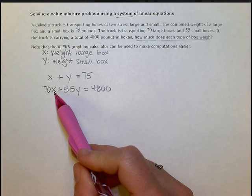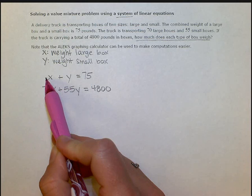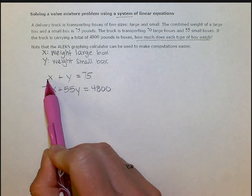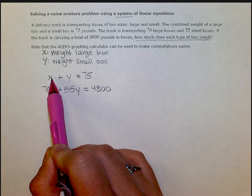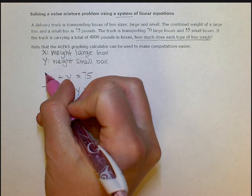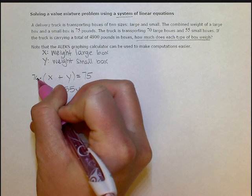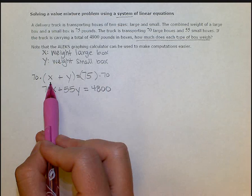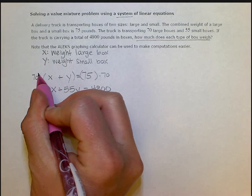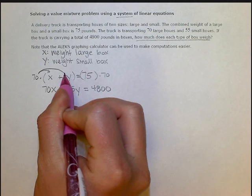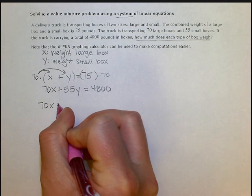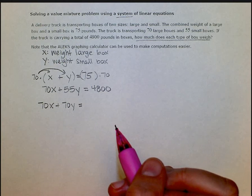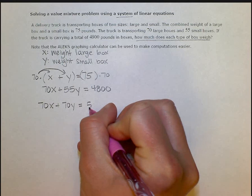The first thing that I want to do is get the coefficients of my x to be the same. So this one's 70 and this one's currently 1, which means I'm going to multiply this top equation on both sides by 70. Because when this multiplies in, I'll have 70x here and a 70x here. So this is 70 is going to distribute, so it's now 70x plus 70y equals, and 75 times 70 is 5250.